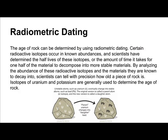The age of rock can be determined by using radiometric dating. Certain radioactive isotopes occur in known abundances, and scientists have determined the half-lives of these isotopes — the amount of time it takes for one half of the material to decompose into more stable materials. By analyzing the abundance of these radioactive isotopes and the materials they are known to decay into, scientists can tell with precision how old a piece of rock is.